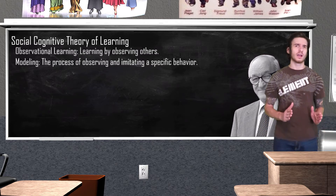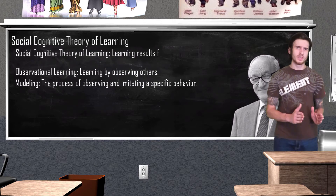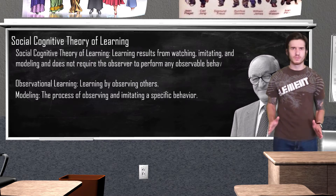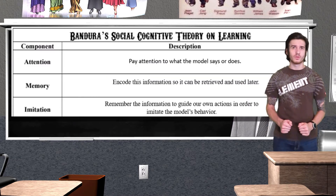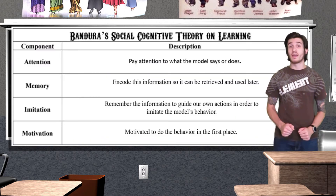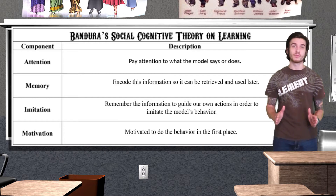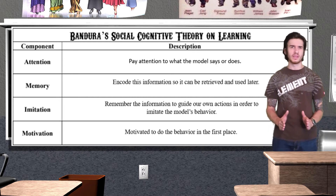Bandura's theory is known as the social cognitive theory of learning, which states that learning results from watching, imitating, and modeling, and does not require the observer to perform any observable actions or receive any observable reward. According to Bandura, for learning to occur through observation we have to do a few things: first, we have to pay attention to what the model says or does; then we have to encode this information into our memory so it can be retrieved for later use; remembering this information helps guide our actions to imitate the model's behavior; and last, we actually have to have enough motivation to do the behavior in the first place.